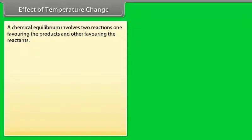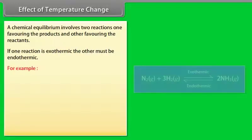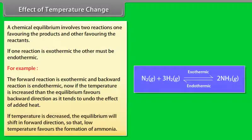Effect of Temperature Change. A chemical equilibrium involves two opposing reactions — one exothermic and one endothermic. For example, if the forward reaction is exothermic and the backward reaction is endothermic, then increasing temperature shifts equilibrium in the backward direction, as it tends to undo the effect of added heat. If temperature is decreased, equilibrium shifts in the forward direction. Therefore, low temperature favors the formation of ammonia.